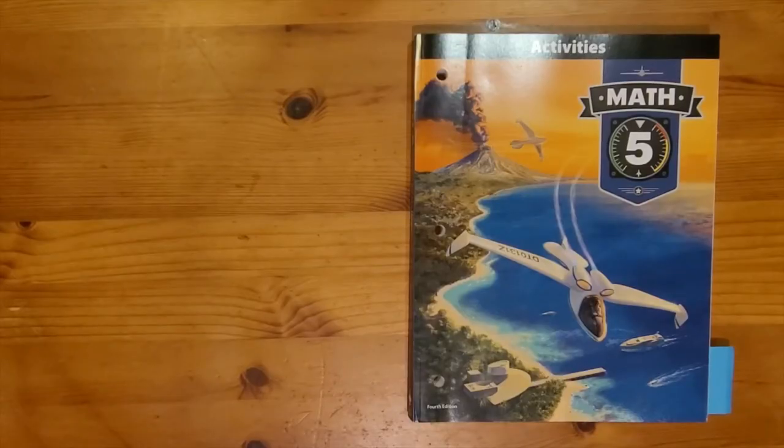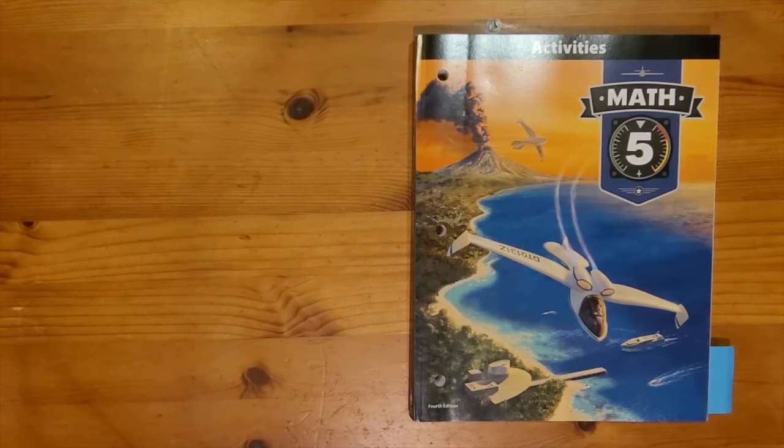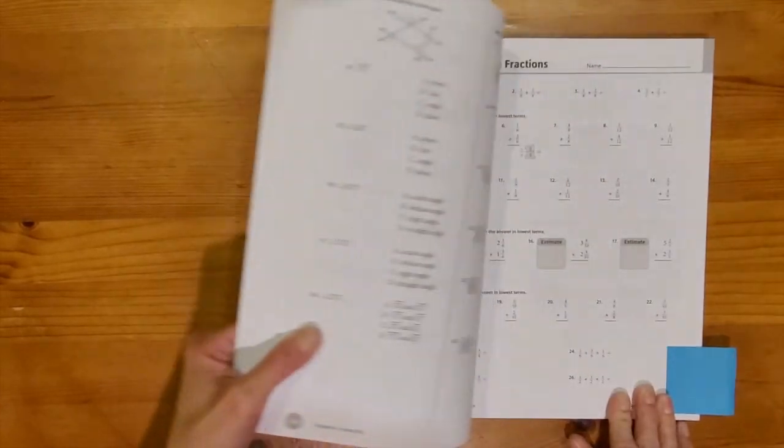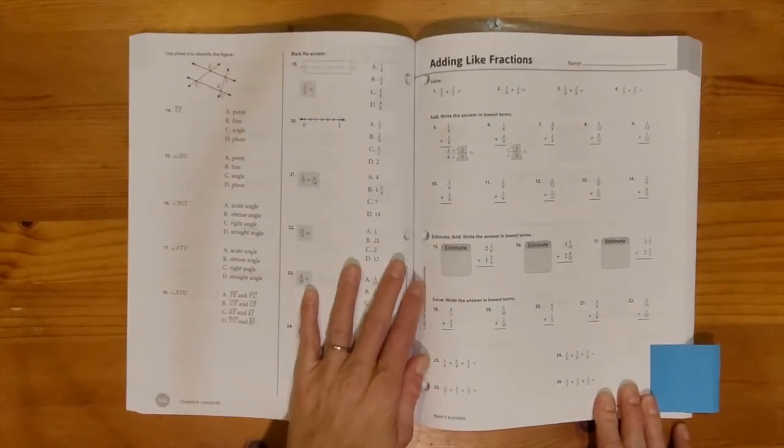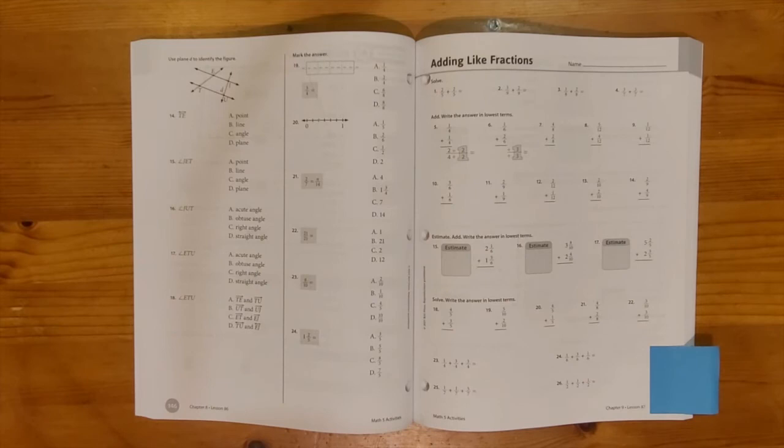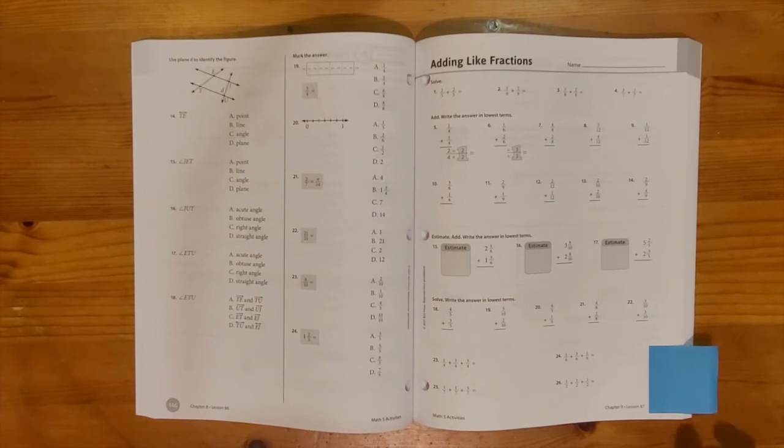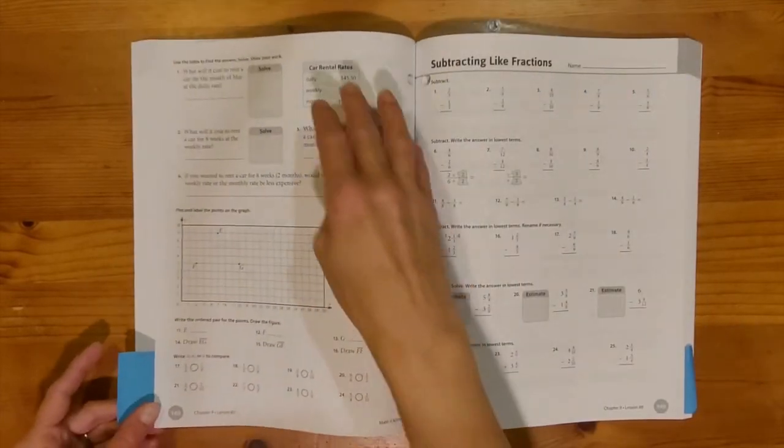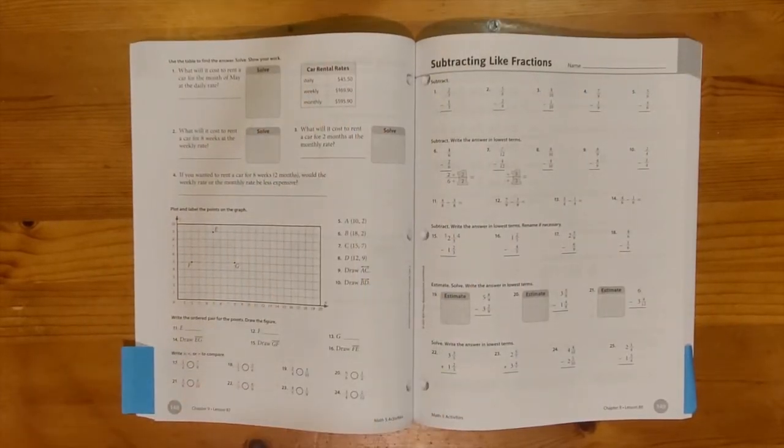This is the Math 5 activity book. So this is a great book to use if you need additional practice for the day's lesson. I'm going to flip ahead to chapter 9 where we were. This is laid out very similar to the way the worktext is. It shows you which lesson this page goes with. So you will always know if it's corresponding with your lesson for the day. This would be practice on the main portion of the lesson from that day.